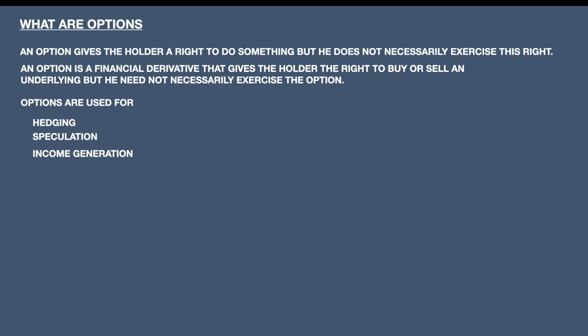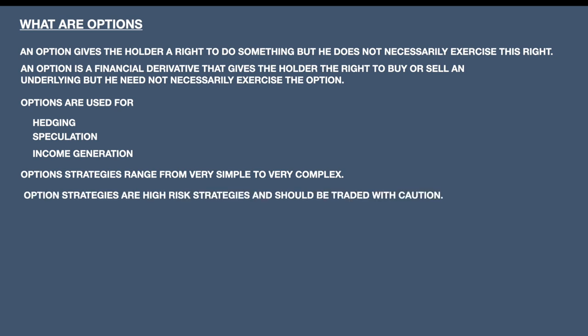Options can also be used for income generation. Income generation happens both when you buy a call option or when you sell an option, though generally income generation is done through option selling. Option strategies range from very simple to very highly complex. Whenever you want to do option trading, you have to be very sure of the various strategies and techniques involved in utilizing the option — for hedging, speculation, or income generation. We must understand that option strategies are very high risk strategies and should be traded with caution.